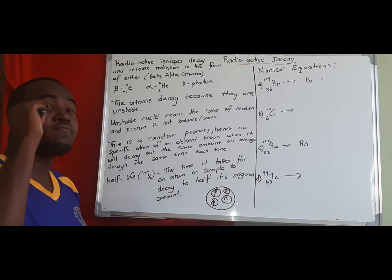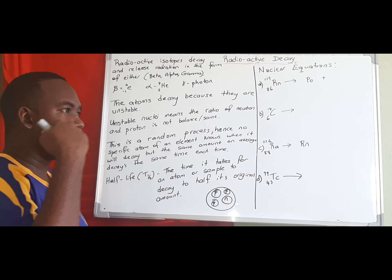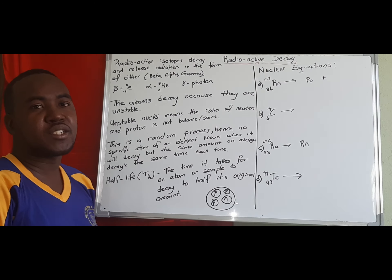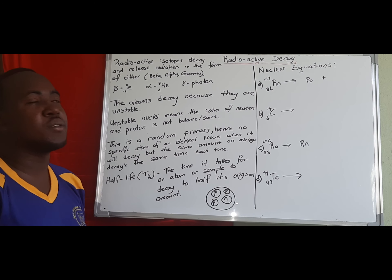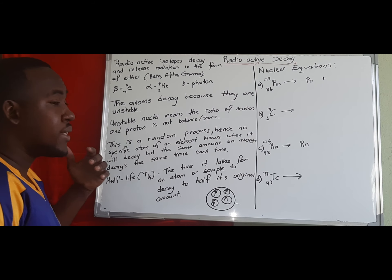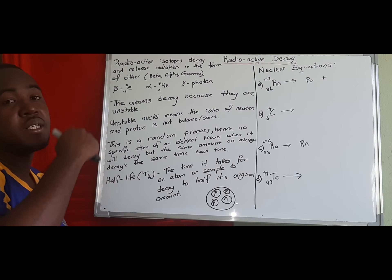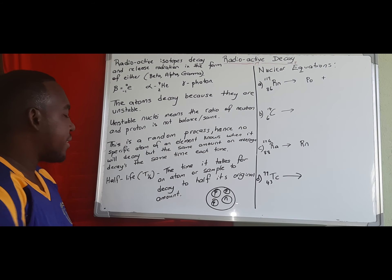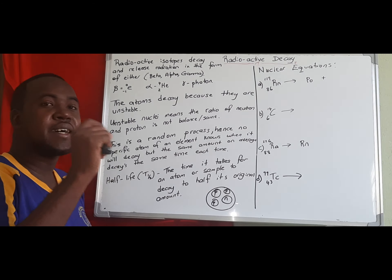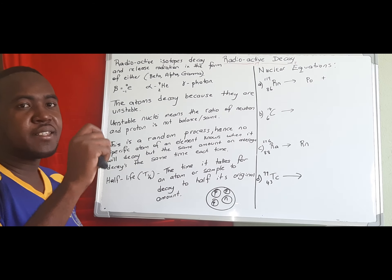Because we cannot predict when a specific atom will decay, the process is random and is not affected by environmental conditions. Heat, moisture, or humidity will not alter the rate at which atoms decay. We do know that at a specific time the same proportion will decay, and this gives us the concept of half-life.